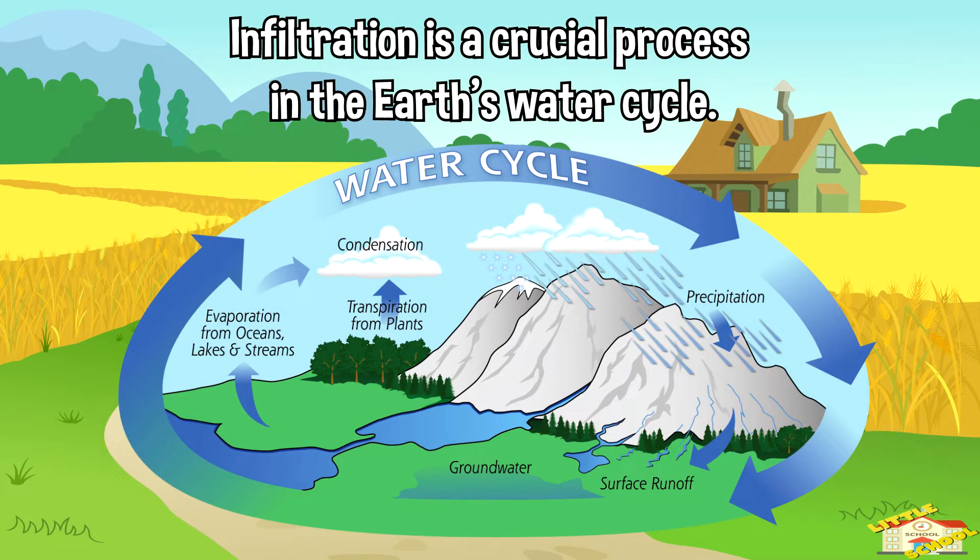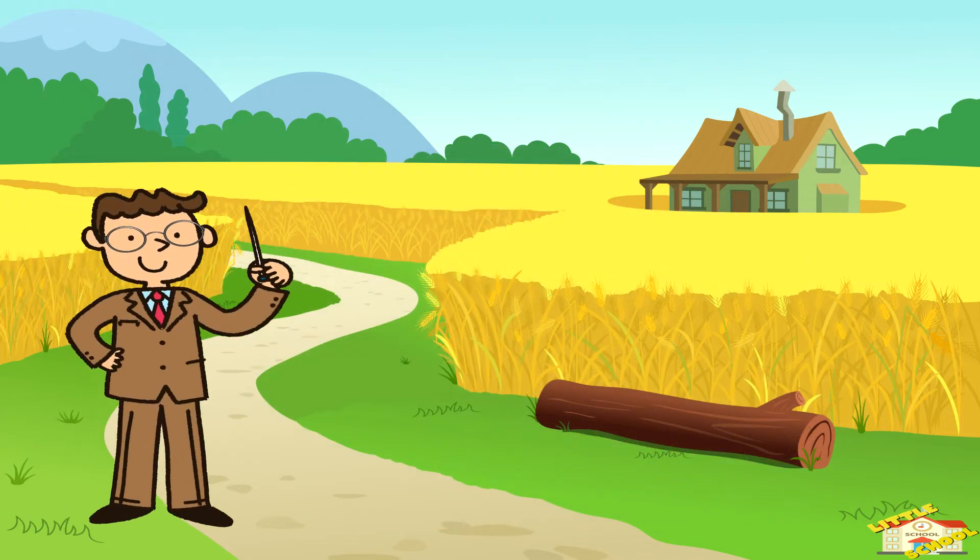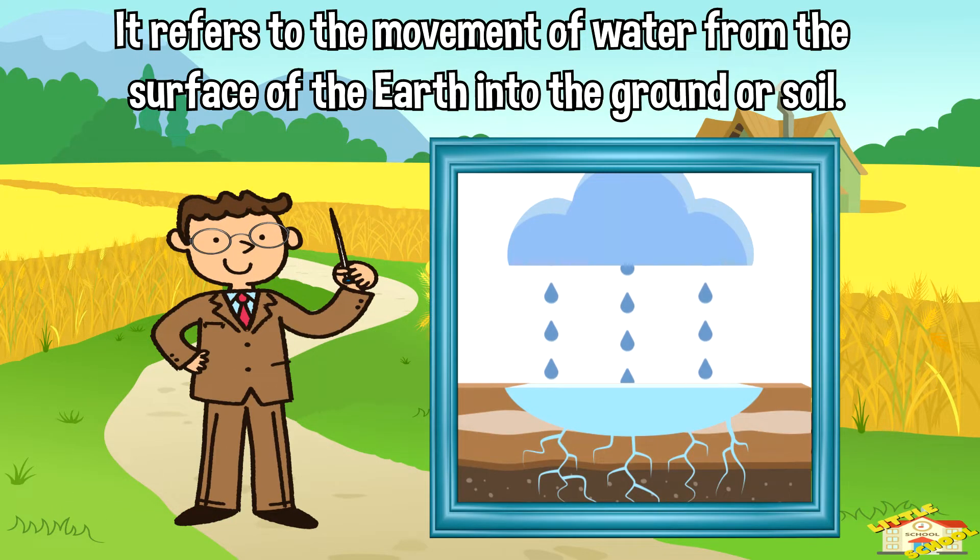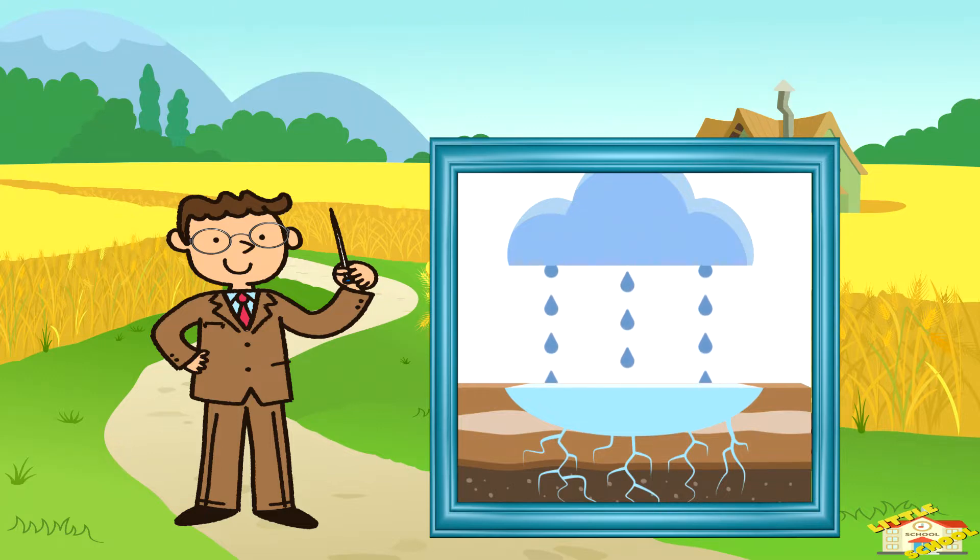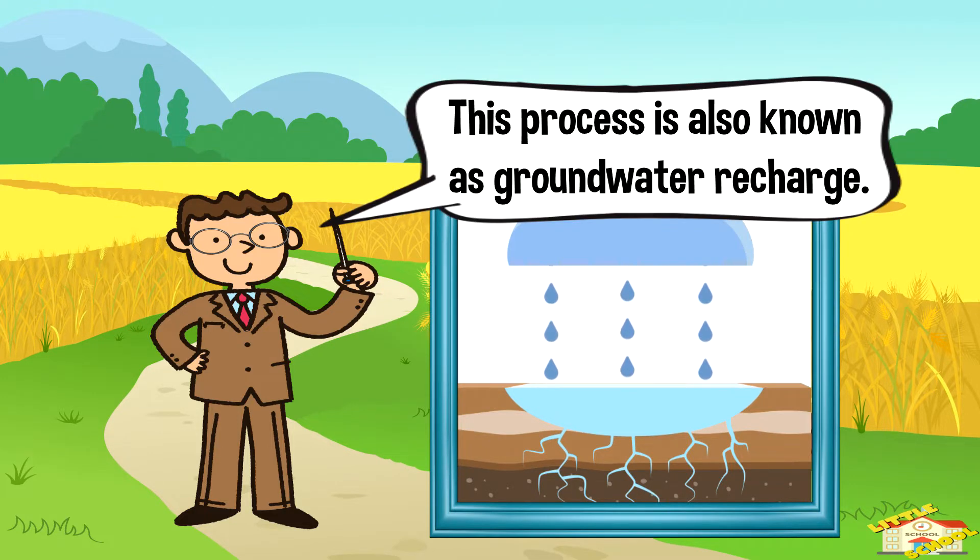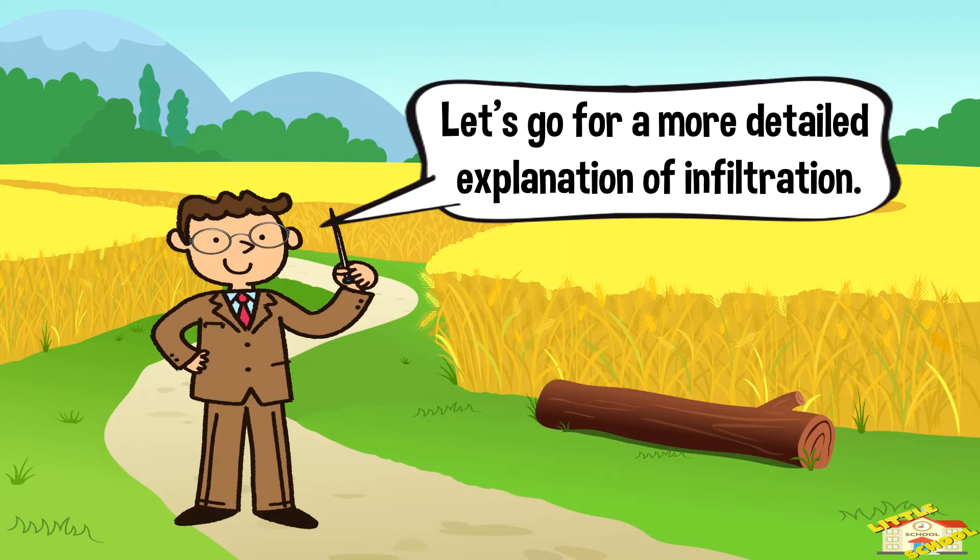Infiltration is a crucial process in the Earth's water cycle. It refers to the movement of water from the surface of the Earth into the ground or soil. This process is also known as groundwater recharge.